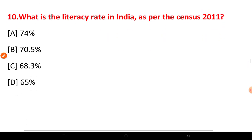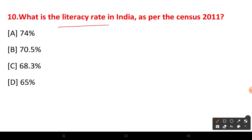What is the literacy rate in India as per the census of 2011? India's literacy rate is 74%, and therefore the illiteracy rate is 100% minus 74%, which equals 26%.